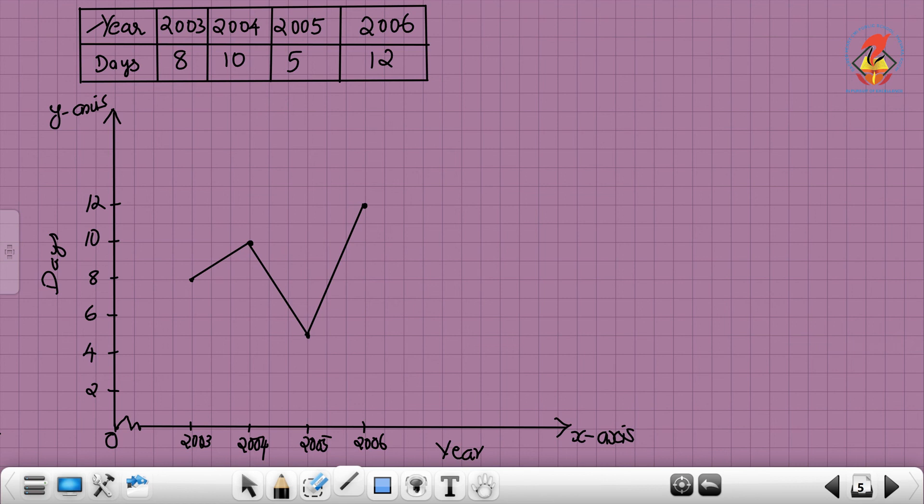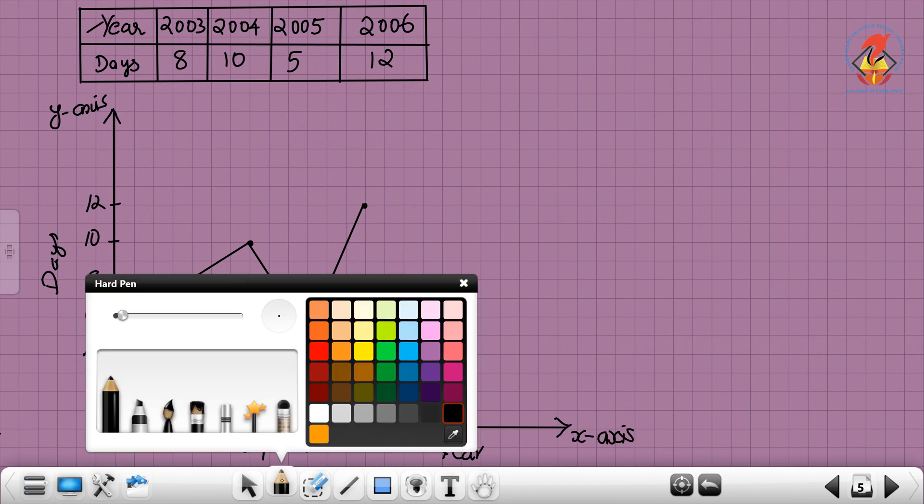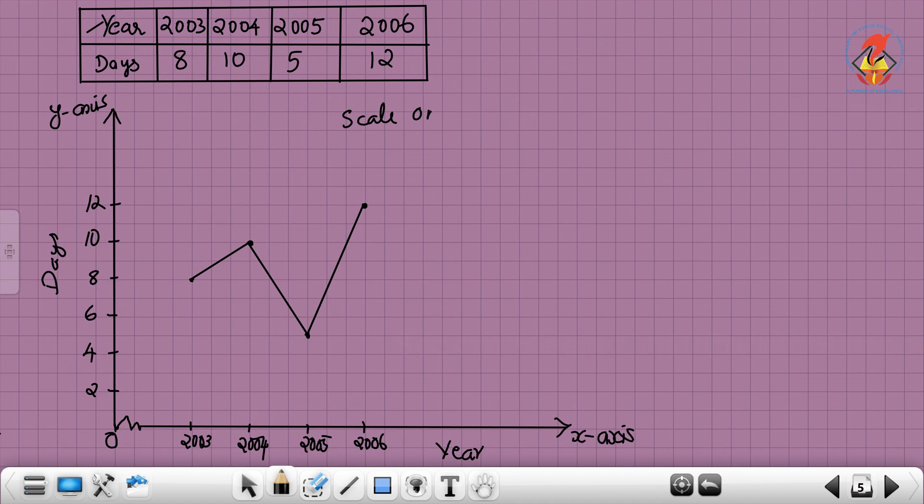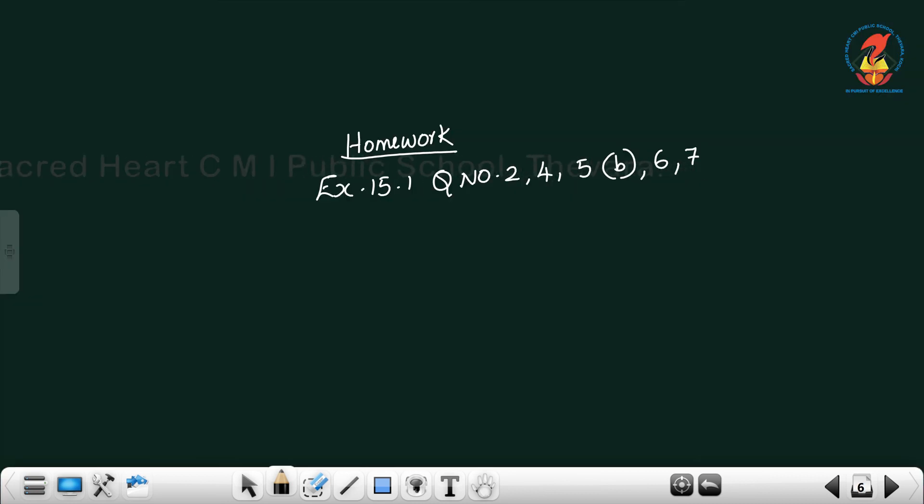You will get the line graph. You should write the scale. Scale on x-axis: 1 unit equals 1 year. Scale on y-axis: 1 unit equals 2 days. You should write the scale for the x-axis and y-axis. This is a line graph. Homework: Exercise 15.1, question numbers 2, 4, 5, 6, and 7.